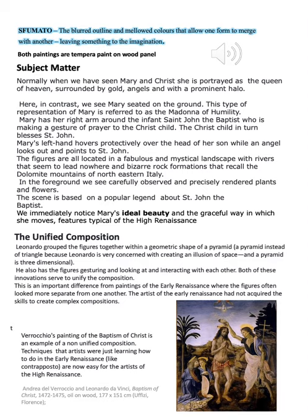What is important and needs to be mentioned about this picture is what we call a unified composition — a typical technique used in the High Renaissance period. A unified composition means that Leonardo grouped his figures together; they are all connected. One is touching, the other is looking down. Our eye flows from one figure to the other because there is a connection between all of them. Leonardo grouped the figures within a geometric shape of the pyramid — I say pyramid rather than triangle because it has depth, three dimensions as opposed to two. He also has the figures gesturing and looking and interacting with each other, and both of these innovations serve to fully unify the composition.